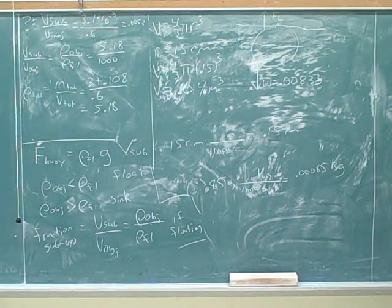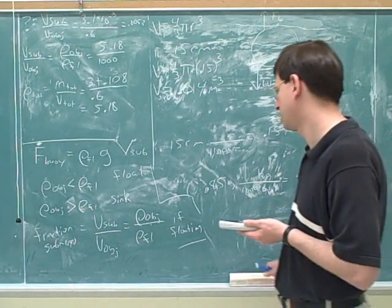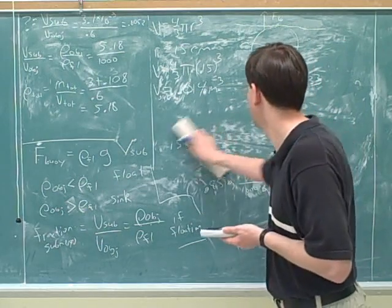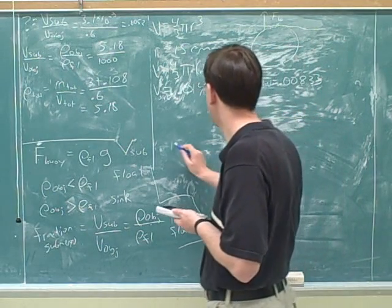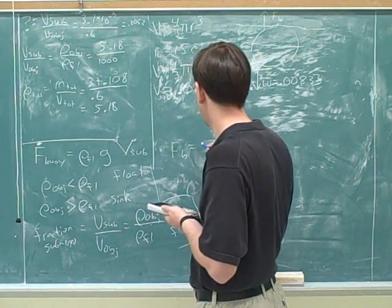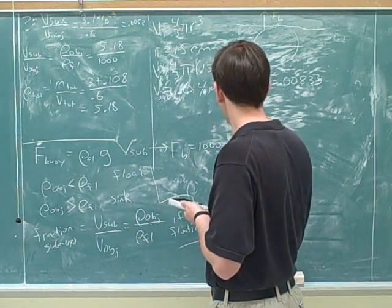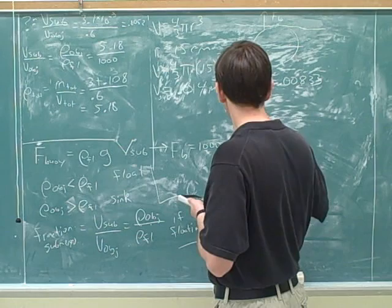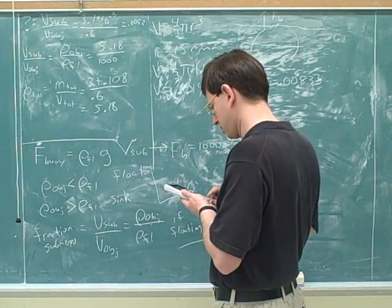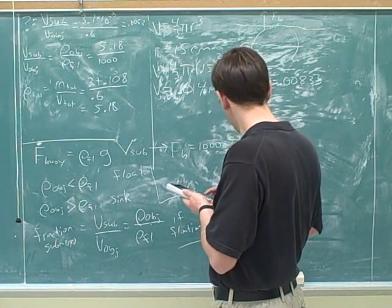So then FB equals 1,000 times 9.8 times 0.014. Yeah, 138.5.